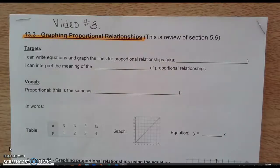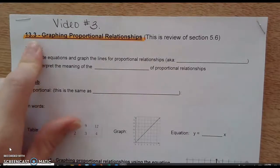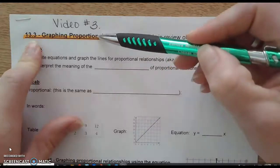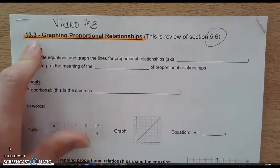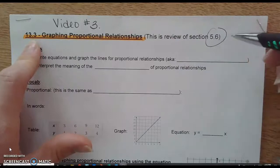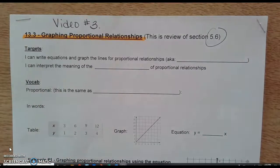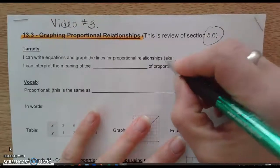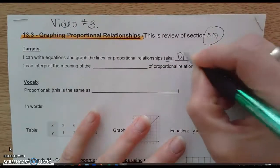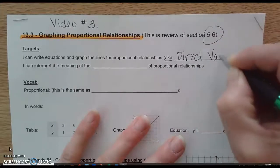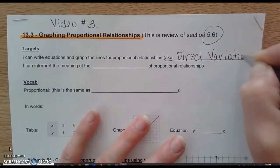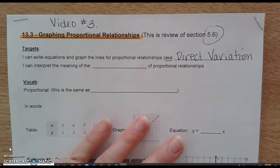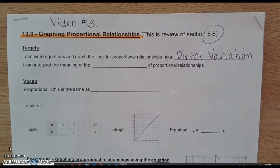This is video 3 for chapter 13, section 13.3, and we're going to be looking at proportional relationships, which we covered in our 7th grade book, chapter 5, section 6. So some of this might sound familiar. The targets: we can write equations and graph lines for proportional relationships. Proportional relationships are also known as direct variation, so when you see direct variation, know that we're talking about proportional relationships.